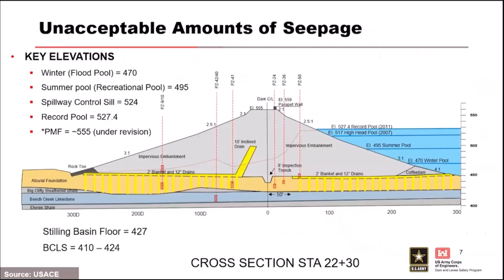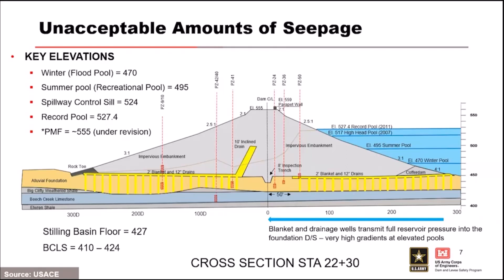This slide helps orient us to the site. The foundation conditions are provided in a profile view showing the relationship of the upstream blanket, the inclined chimney, the downstream blanket, the Beech Creek limestone — that's our karstic unit — and the alluvial foundation left in place. They did have an inspection trench but did not take it down to the top of rock. The flaw this creates is that the upstream blanket is in direct contact with the reservoir, with only riprap cover, so we can transmit reservoir pressures very near the dam centerline into the karst, with no seepage cutoff.